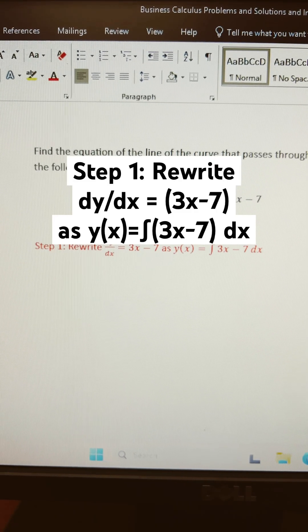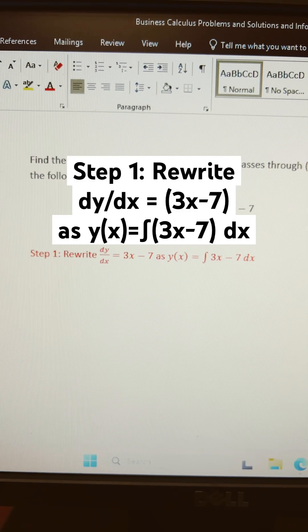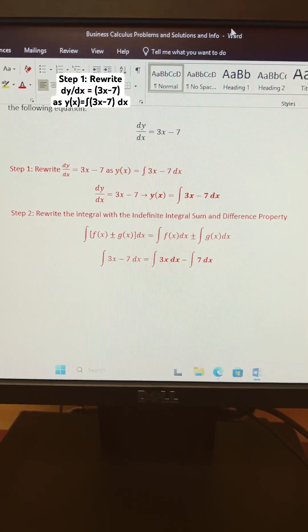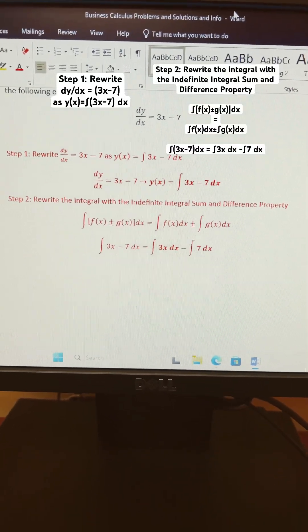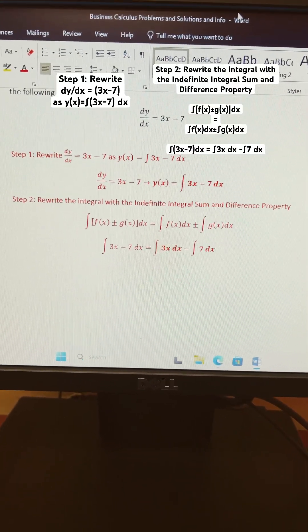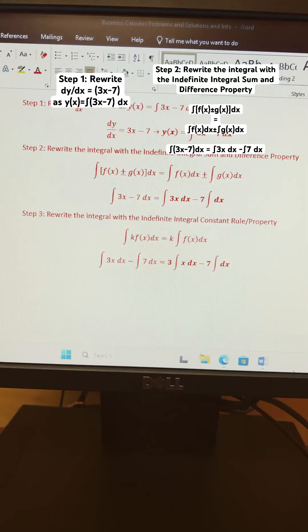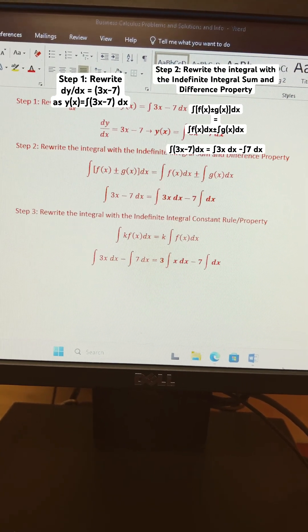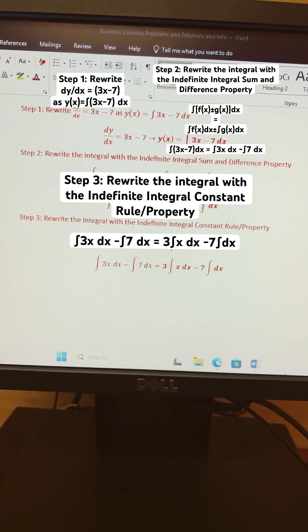Step 1 is to rewrite as y(x) equals integral of (3x minus 7) dx. Step 2 is to rewrite the integral with the indefinite integral sum and difference property. It should look like this. Then for step 3, you rewrite the integral with the indefinite integral constant rule property.